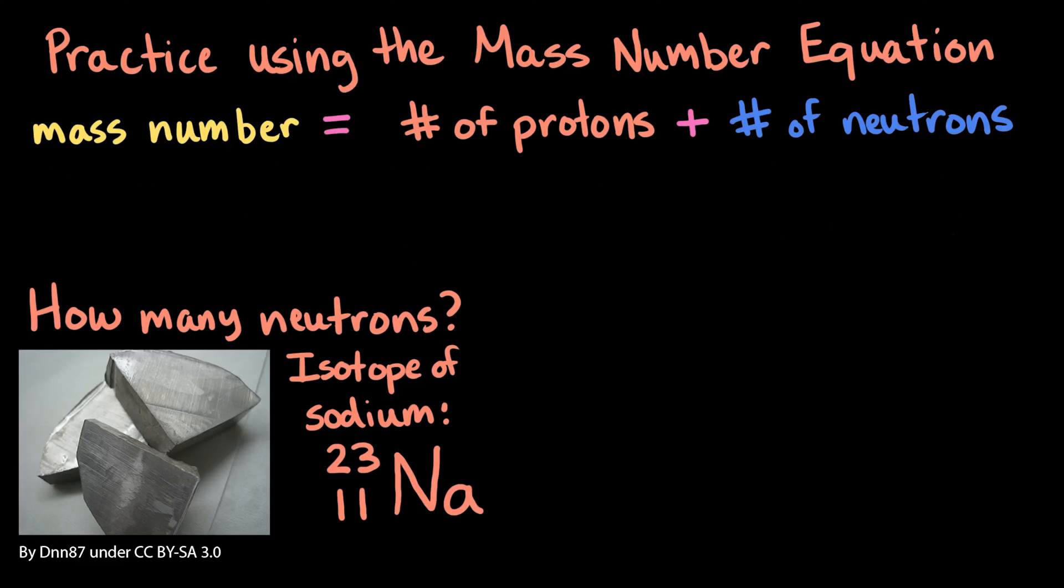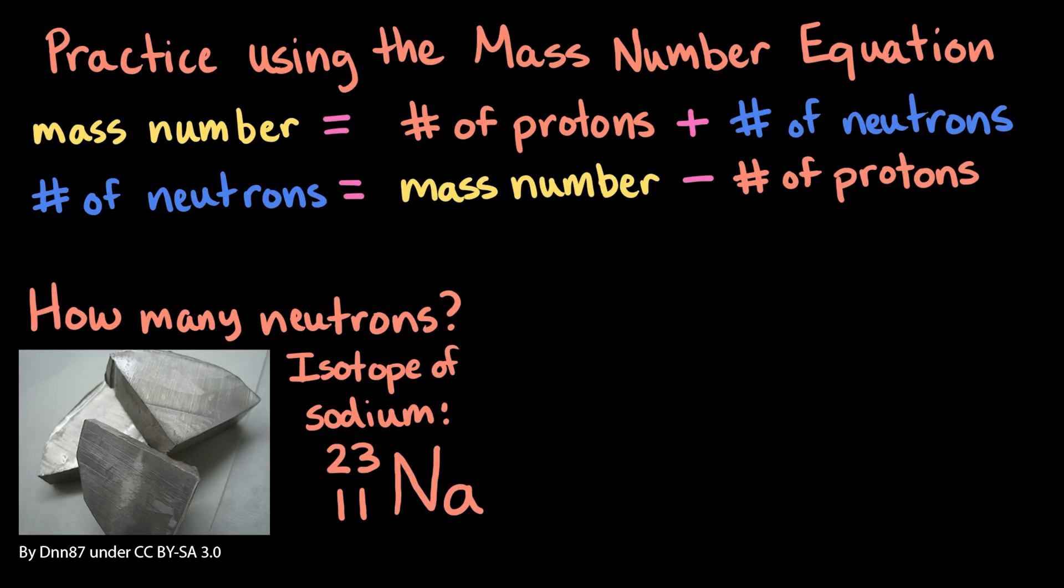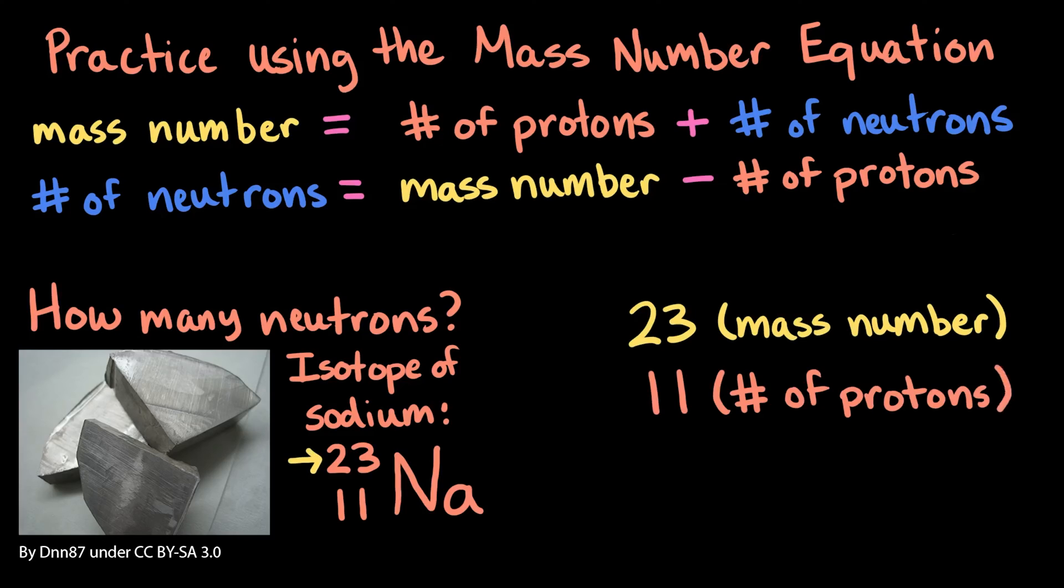The rearranged equation is as follows. The number of neutrons equals the mass number minus the number of protons. Based on this notation, we know that this sodium isotope has a mass number of 23 and an atomic number of 11. If we subtract the atomic number, 11, from the mass number, 23, we're left with 12, which is the number of neutrons in this sodium isotope.